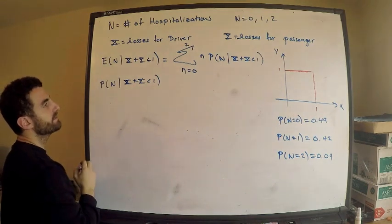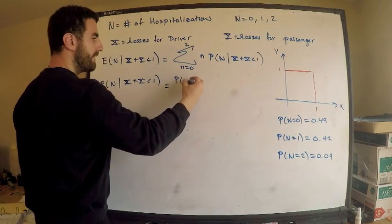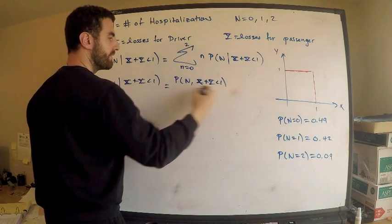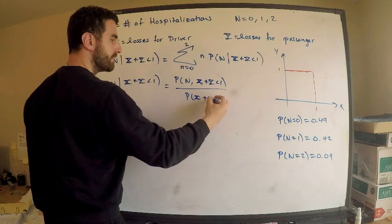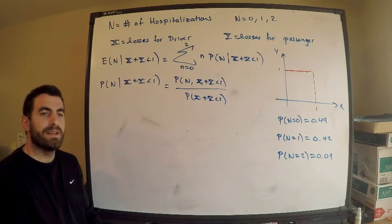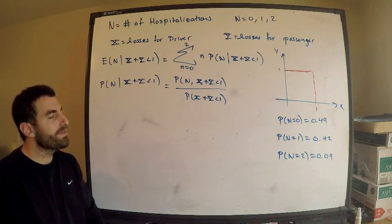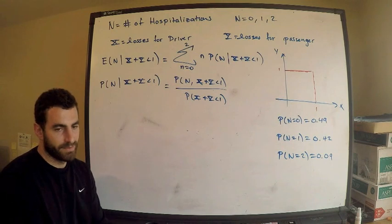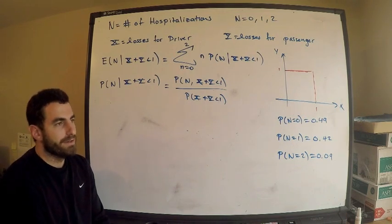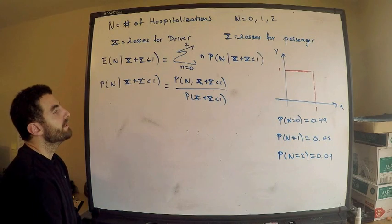By definition, this equals the probability that N equals n AND the total loss is less than 1, divided by the probability that the total loss is less than 1. Now, as usual, I'm going to give SOA the benefit of the doubt and say they just want you to fill in the details. Regardless, we need to compute this. I'll start with the denominator: what is the probability that the total loss is less than 1?